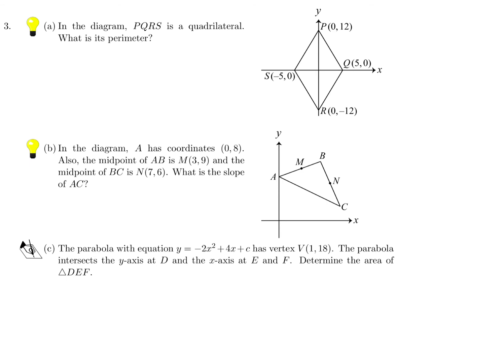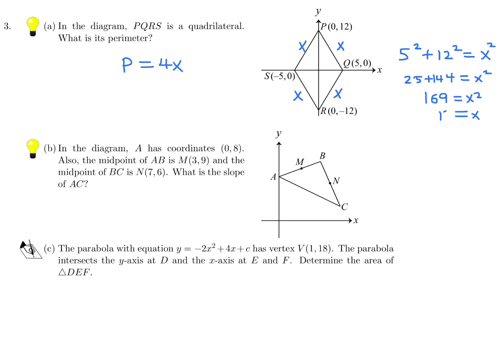In the diagram, PQRS is a quadrilateral. From the symmetry of the diagram, all sides are equal, so the perimeter is 4X. The sides shown are 5 and 12, which is a Pythagorean triple: 5 squared plus 12 squared equals 13 squared, so X equals 13. Therefore the perimeter P equals 4 times 13, which is 52.